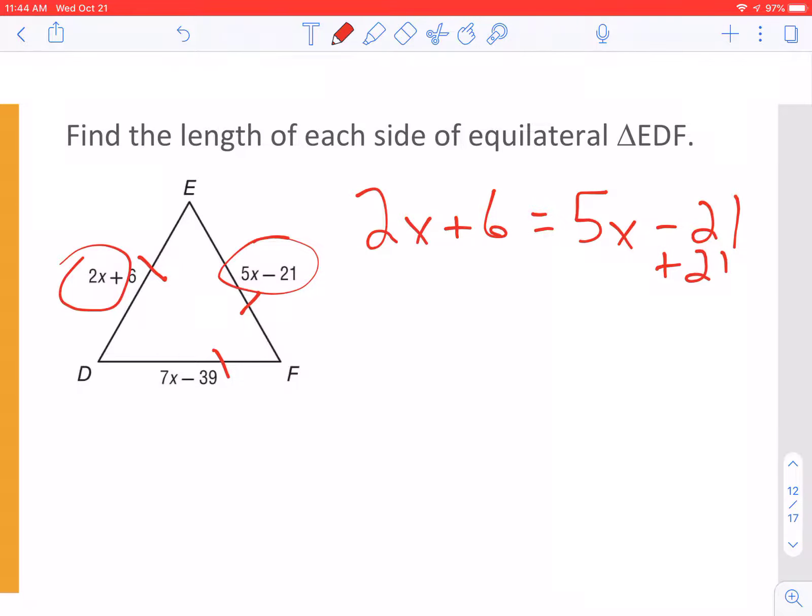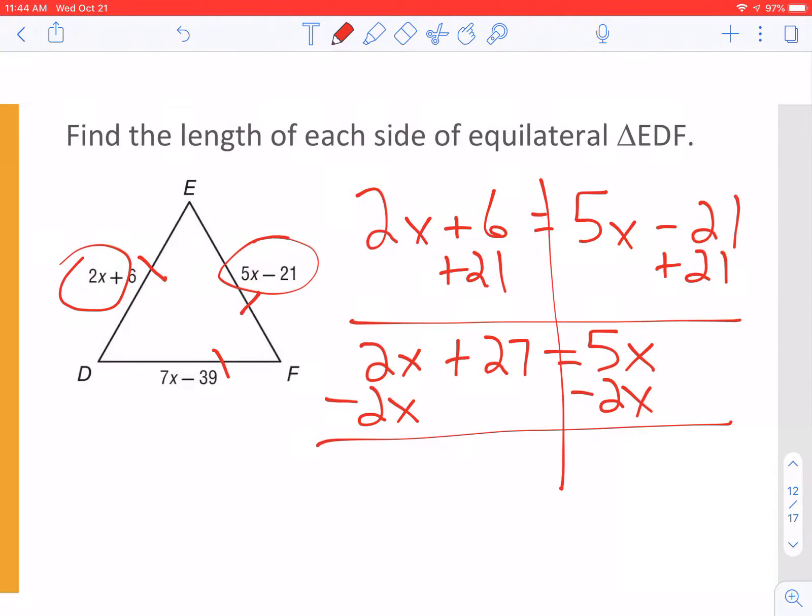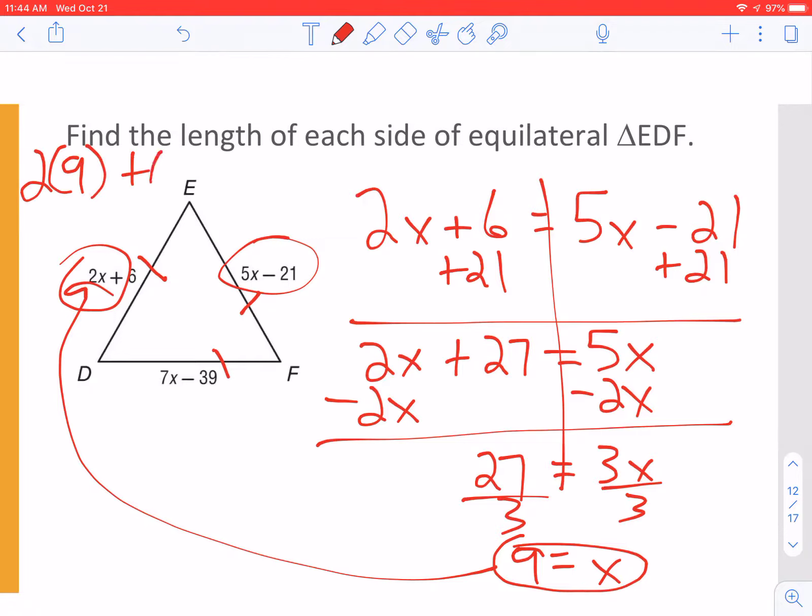The first thing I'm going to do is add 21 to both sides. So I get 2X plus 27 equals 5X and now I got to get all the X's over. Subtract 2X from both sides and X equals 9. No matter how you solve this, you're always going to get X equals 9. And I just plug the 9 into, I'll just plug it in here. 2 times 9 plus 6, 18 plus 6 is 24. So they're all the same. The length of each side should be 24.